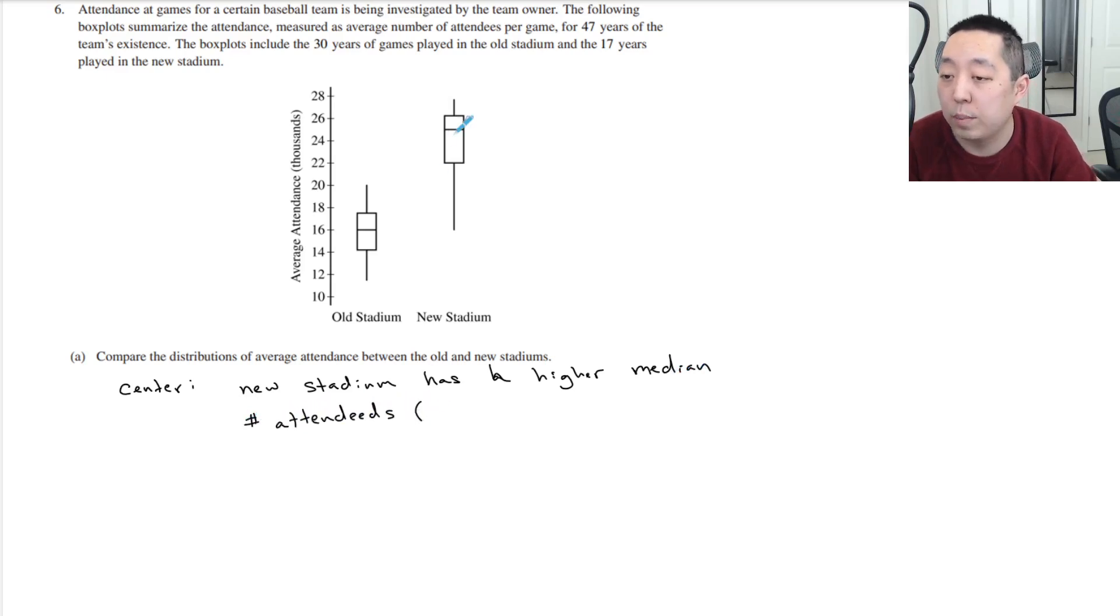That number looks like about 25, 25 average number of attendees per game, compared to the old stadium which has about 16 attendees per game.